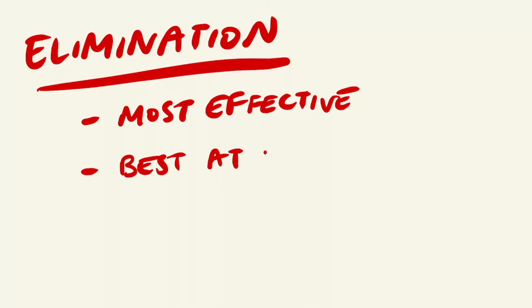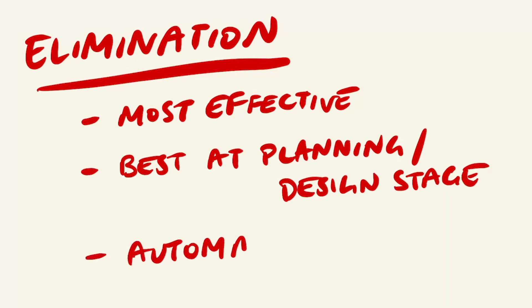With elimination, the workplace should always aim to eliminate the hazard as much as reasonably practicable. This is best done at the planning or design stage of a work process, rather than when it's already established in the workplace. A good example is automating a manual task through the use of robots or machinery.